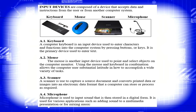Third, we have the scanner. A scanner is used to capture a source document and converts printed data or images into an electronic data format that a computer can store or process. It is like a camera which captures an image. We also have the microphone, which is used to input sound that is then stored in digital form. It is used for various applications such as adding sound to a multimedia presentation or for mixing music.